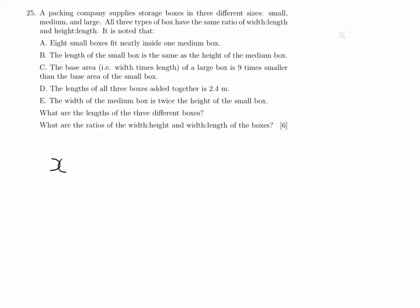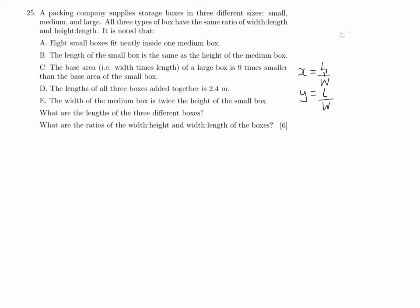To solve this we're going to make a substitution. I'm going to call x the height divided by the width, and y the length divided by the width. We can do that because each of the different boxes has the same width-to-length ratio and the same height-to-length ratio. So because x is the height divided by the width, the height of the small box divided by the width of the small box equals x, which means the height of the small box equals x times the width of the small box.